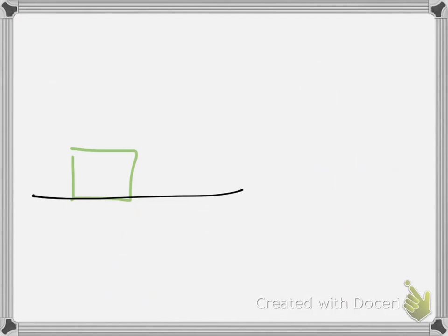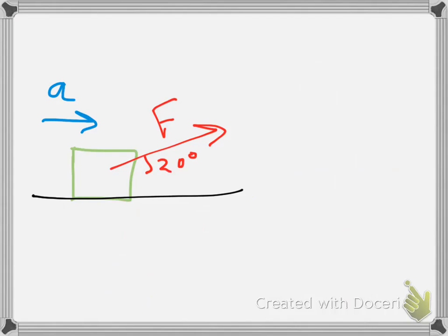What if we take that same box sitting on the same table, and instead of pulling it straight forward, we pull it up at an angle — 20 degrees? We're going to assume the force is not big enough to actually lift the box off the table; we're still sliding the box along the table, just pulling up at an angle. The box is going to be moving horizontally, and assuming no friction, it's going to accelerate in that direction.